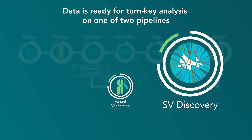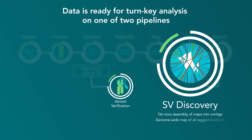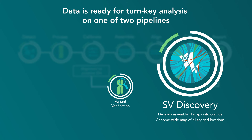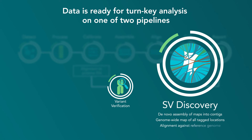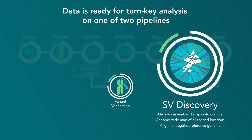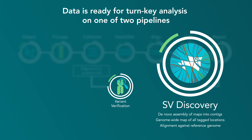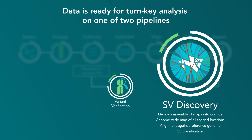Variant discovery assembles the maps de novo into contigs to produce a genome-wide map of all tagged locations, which are then aligned against a reference genome that has been in silico labeled with tag locations. Any discrepancies between assembled and reference genomes are inspected, and variant type is classified.